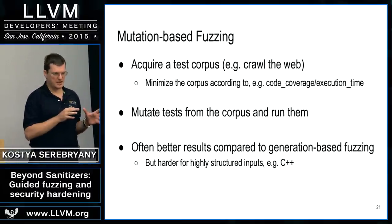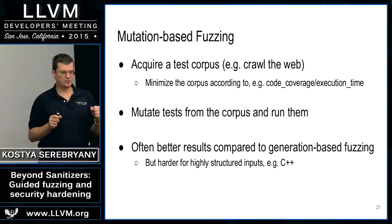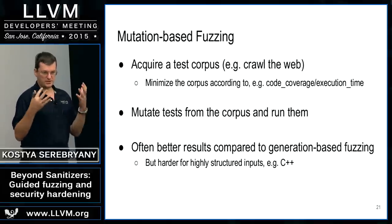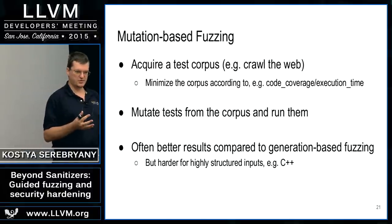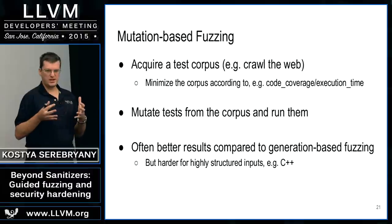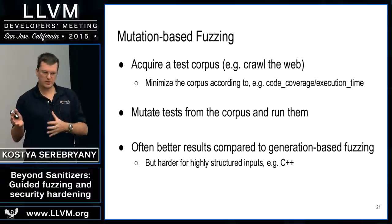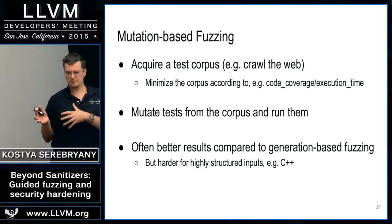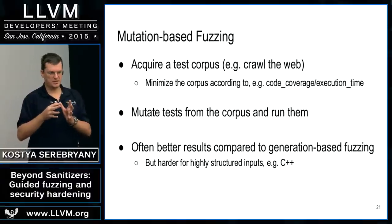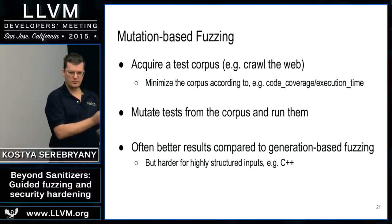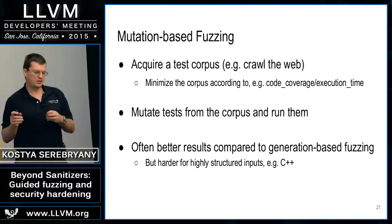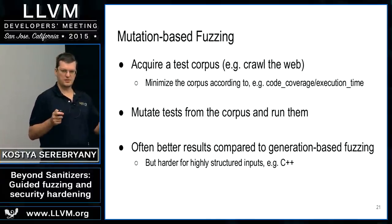Another approach that is sometimes much more efficient in finding bugs is mutation-based fuzzing. You take a corpus of tests — if you are fuzzing a C compiler, a corpus would be a set of C source files — and then you mutate the elements one by one: flip bits, add bytes, remove bytes, et cetera. Eventually you find bugs not present in the initial corpus but revealed by the mutations. We have seen this approach leads to much better results in many target applications.